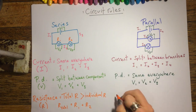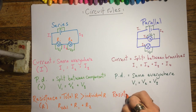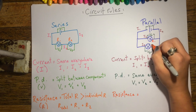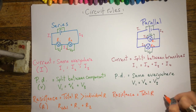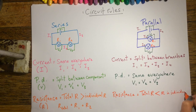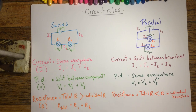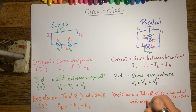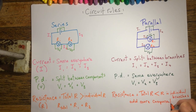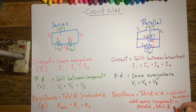Resistance in parallel is a little bit more tricky. If you think about the pathways that the charges will take, they've got two different pathways to go down. Therefore, the total resistance is actually going to be less than the resistance in either of the individual branches. Think of this like queuing in a supermarket — if they open up another till, each person gets through quicker because there's more than one pathway. So as we add more components in parallel, the total resistance of the circuit decreases.